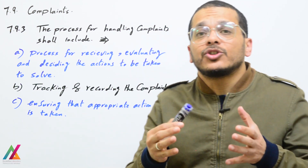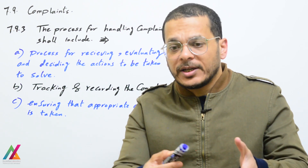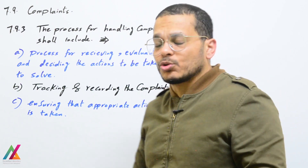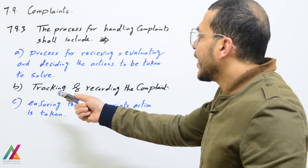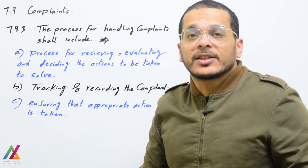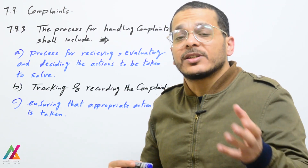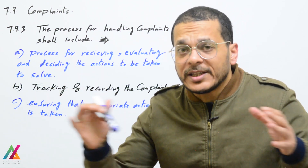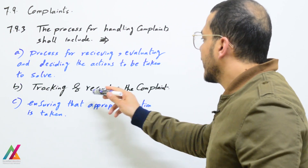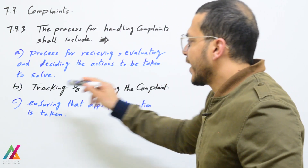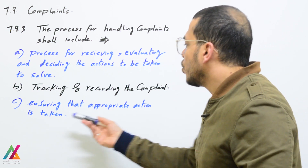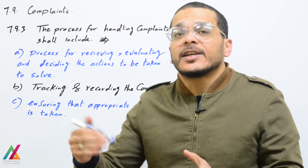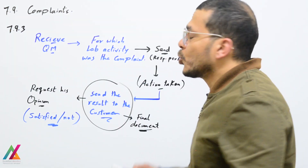The process for handling complaints shall include the following: first, the process for receiving, evaluating, and deciding the actions to be taken to solve the issue — how the complaint was received, how it was evaluated, and what action was taken. Second, tracking: track the complaint from receiving it all the way through to solving the issue, recording all steps during this tracking. Third, recording complaints and ensuring that appropriate action is taken to solve the issue.